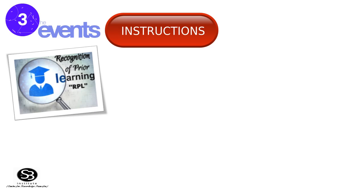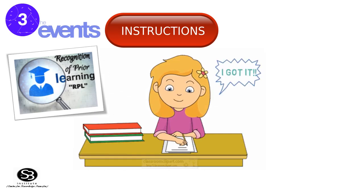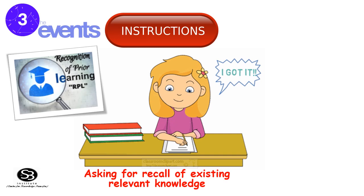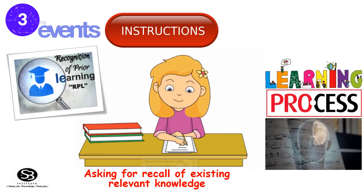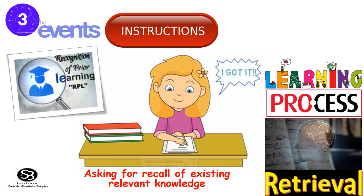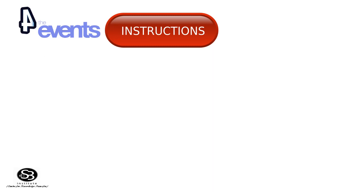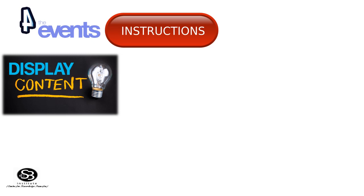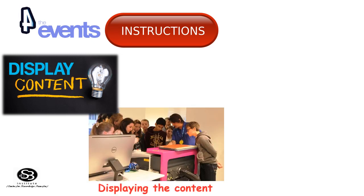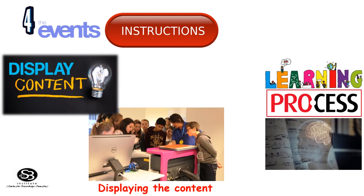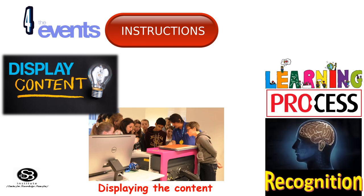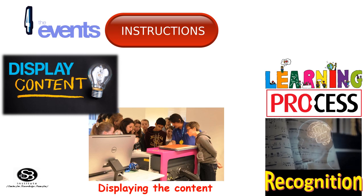The third event is Stimulating Recall of Prior Learning — asking for recall of existing relevant knowledge. The learning process involved here is retrieval to working memory. The fourth event is Presenting the Stimulus — that is, displaying the content. The learning process involved here is pattern recognition or selective perception.